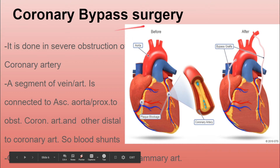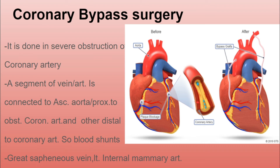Next is coronary bypass surgery. This surgery is mainly done when there is complete obstruction of the coronary artery. As you can see in this figure, the coronary artery is completely blocked. To restore normal blood flow, one segment of a vein or artery is connected to the ascending aorta, or to the proximal part of the obstructed coronary artery. The other end is connected to the distal part of the coronary artery, so blood shunts from the ascending aorta to the distal coronary artery, bypassing the blocked part.